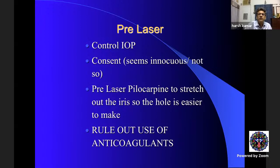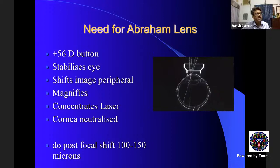When preparing for iridotomy: control intraocular pressure first. Consent is very important — it seems like a small procedure but it is not. Rule out anticoagulant use; patients must stop anticoagulants for five to six days before the procedure. Use pilocarpine one to two drops to stretch the iris. Use an Abraham's lens, which has a 56-diopter button to concentrate the beam onto the periphery, stabilize the eye, shift and magnify the image, concentrate the laser, and neutralize the cornea.